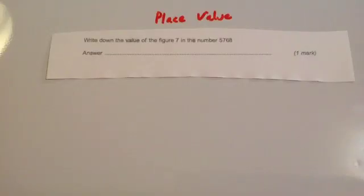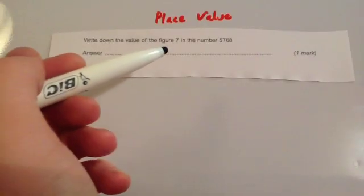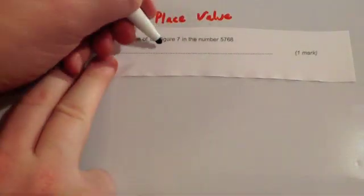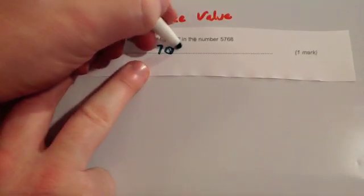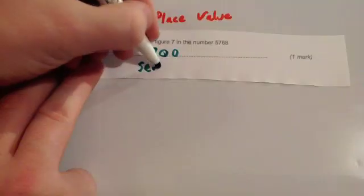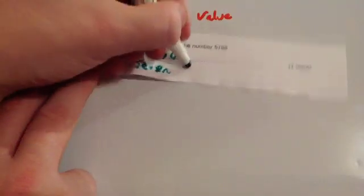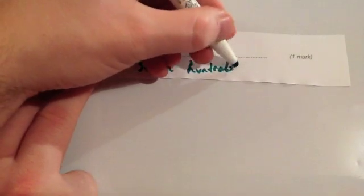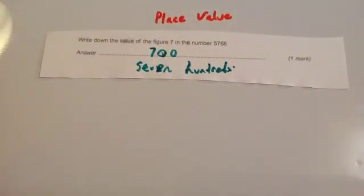Here's another question: write down the value of the figure 7 in the number 5768. Because it's in the hundreds column you'd write seven hundred. Alternatively you could write seven hundred or hundreds, but you cannot just write hundred.